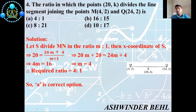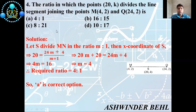Fourth question: the ratio in which point S(20, k) divides the line segment joining points M(4, 2) and N(24, ?). There are four options: (a) 4:1; (b) 16:15; (c) 8:21; (d) 10:17. Now we discuss the solution.